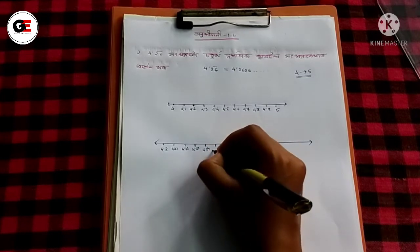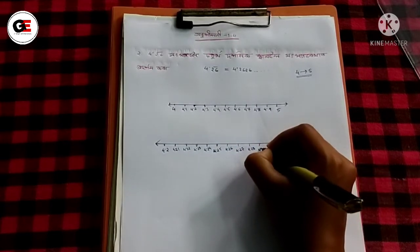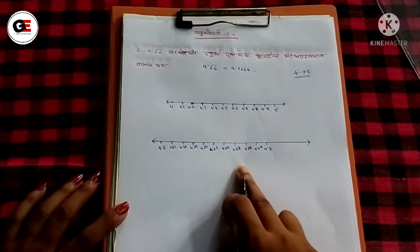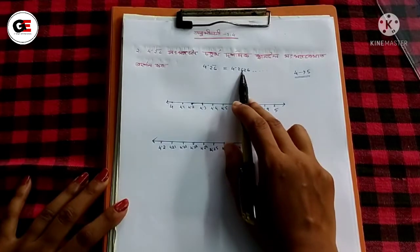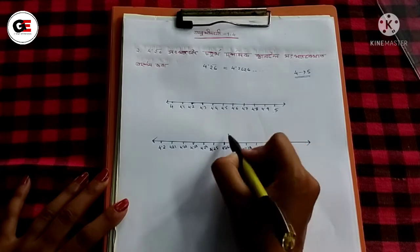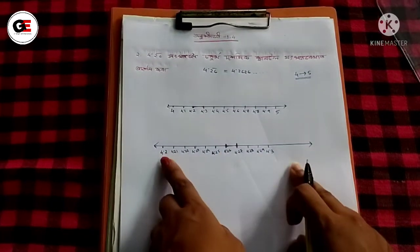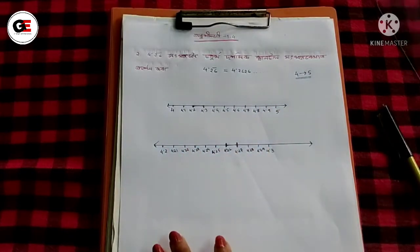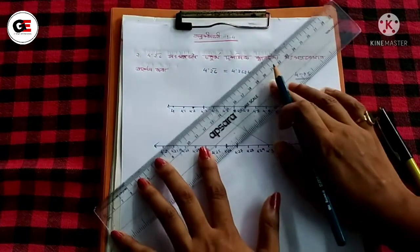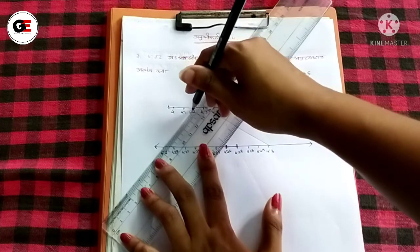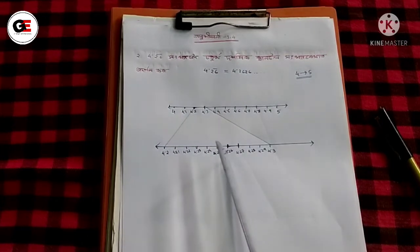So we have 4.26 and 4.27. We can see this when we look between 4.2 and 4.3. So we have 4.32 and we identify the relevant sub-intervals.